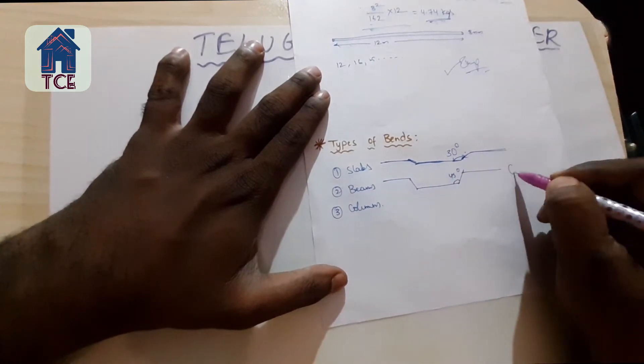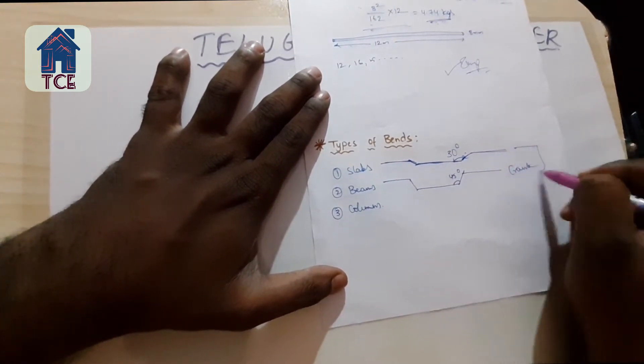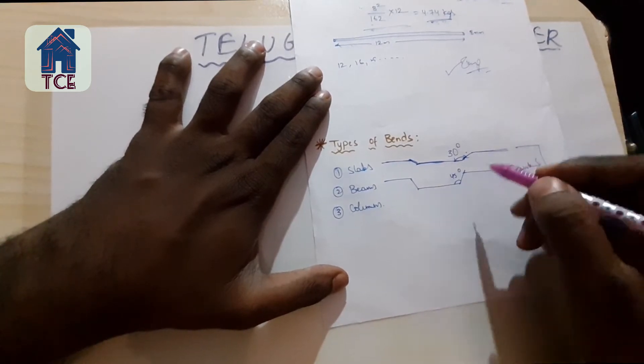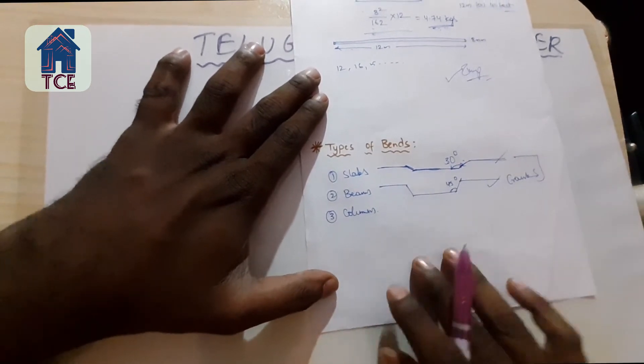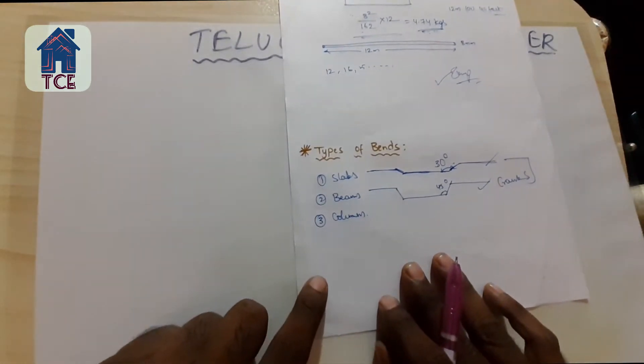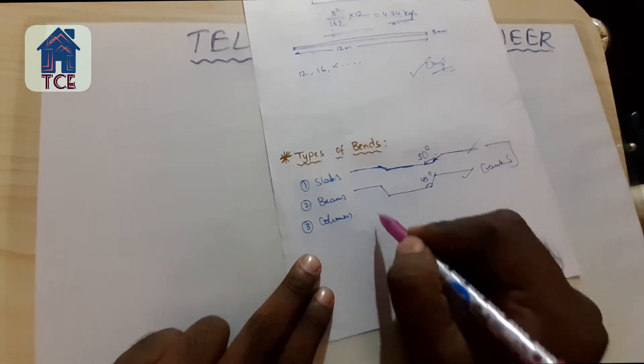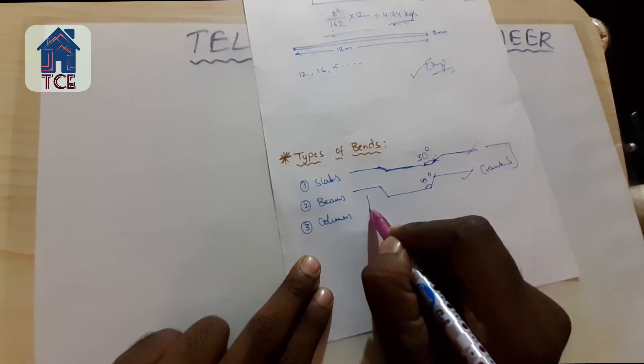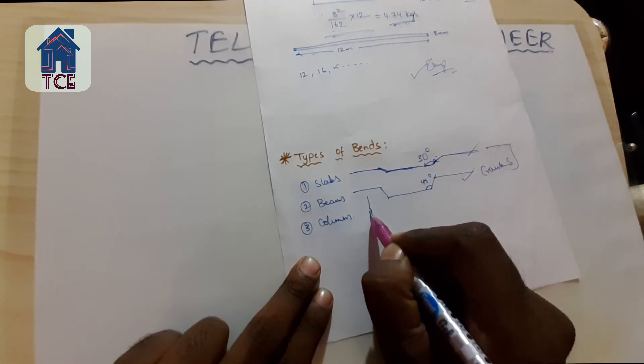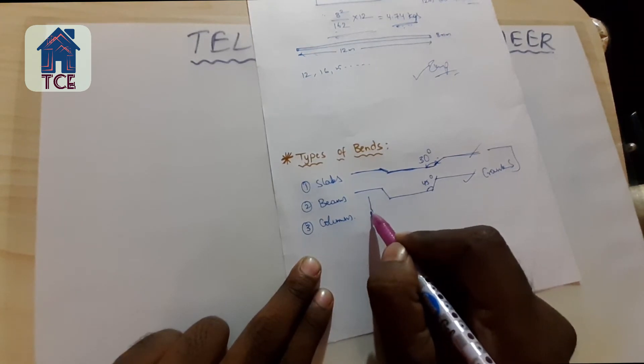It is a crank bar. It is used in beam and slab, 30 degrees and 45 degrees. Columns - it is a crank bar. It is a must and should.